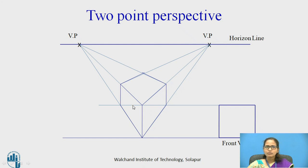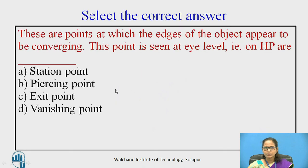This is how the two-point perspective is presented. In the two-point perspective, you have two vanishing points, whereas in the one-point perspective, you have one vanishing point.